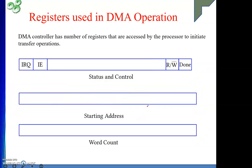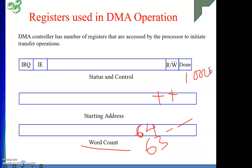The second register is the word count. This specifies how many words or bytes are being transferred in a DMA operation. The communication takes place in a loop, so the word count provides the terminating condition. Suppose the word count is 64 — after each transfer, the address is incremented and the word count is decremented. So if the address starts at 1000, the next will be 1001, 1002, and so on. When the word count hits zero, communication stops.